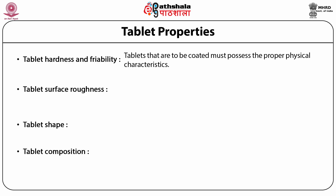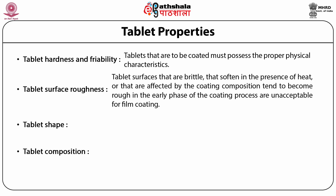The second parameter is tablet surface roughness. Tablet surfaces that are brittle, that soften in the presence of heat, or that are affected by the coating composition tend to become rough in the early phase of the coating process and are unacceptable for film coating. Film coatings adhere to all exposed surfaces so that any surface imperfection is coated but not eliminated. The quality of thin film coatings depends much more on the quality of the starting tablet than sugar coatings, which with their high solid content dry more slowly and can fill many minor tablet surface imperfections.